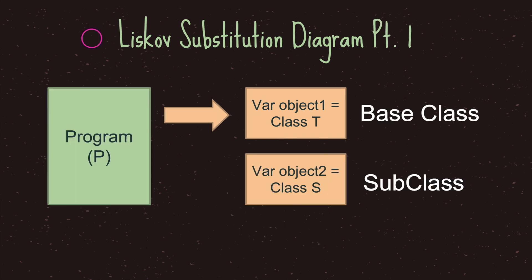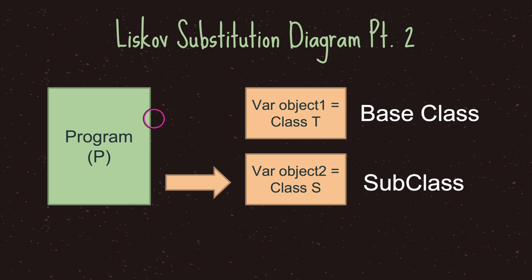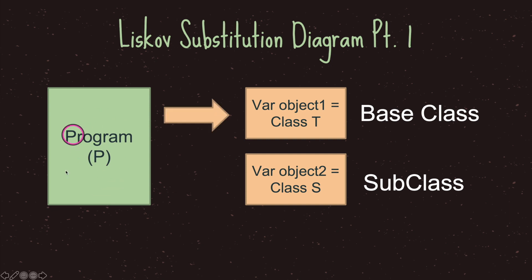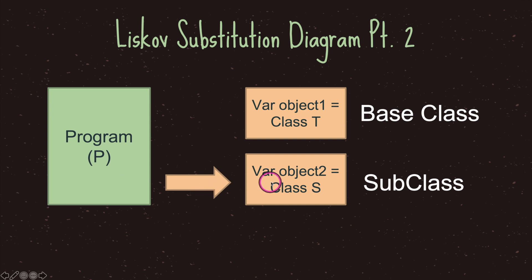The substitution principle can be shown in this graph. Our entire application relies on an object that comes from class T, our base class. Now if we were to switch what our program uses — if program P uses class S — our program should continue to work. The substitution principle says that if a subclass inherits from the base class and some function or program uses the subclass, it should work with the base class as well, and vice versa.